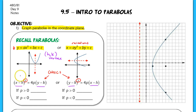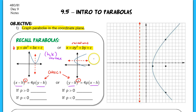Whichever term is squared will indicate to you how you graph the parabola. If you have the quadratic term as the x term, then you're going to graph a parabola that either opens up or opens down. And if you have the quadratic on the y term, then it's either going to open to the right — like the picture here — or it could open to the left as well. So that's how you would tell just the general shape.